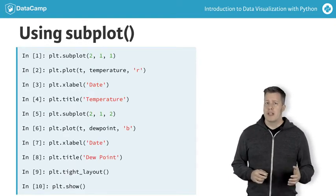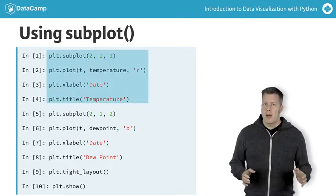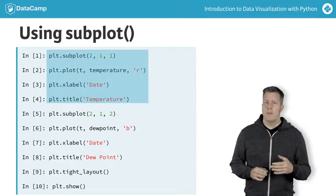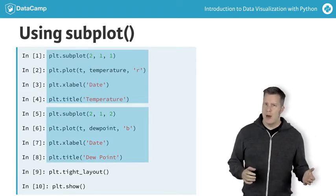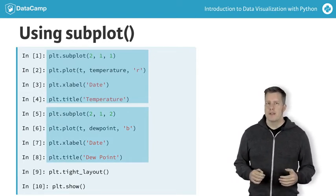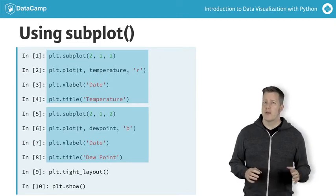This is the code that made the preceding figure. The top subplot is active for the first four lines, while the bottom subplot is active for the rest. Before showing the figure, issuing tight layout pads spaces between the subplots so the tick labels and titles display without overlap.